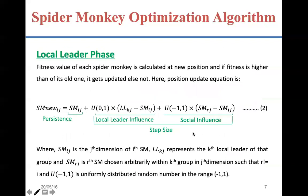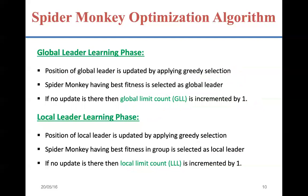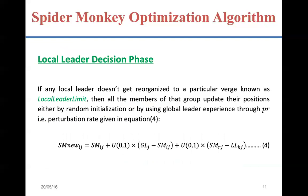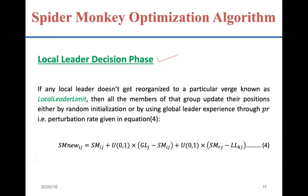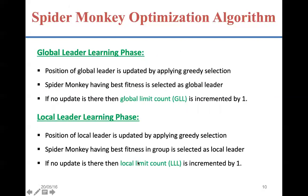So far we have covered four phases: local leader phase, global leader phase, global leader learning phase, and local leader learning phase. The next phase is the Local Leader Decision phase, where decisions are taken based on the updates and learning. These decisions are based on the local leader limit and global leader limit — the local leaders and global leader decide whether smaller groups or the entire big group should be divided into further groups or remain the same.